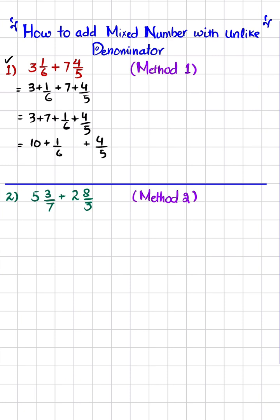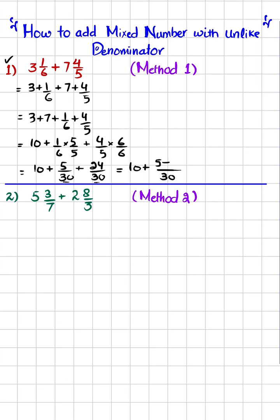Now you can see in the denominator we have 6 and 5. So what I will do is multiply 1/6 by 5/5 and multiply 4/5 by 6/6, in order to get the same denominator in both fractions. So it will become 5/30 plus 24/30. Now you can see both denominators are the same, both are 30.